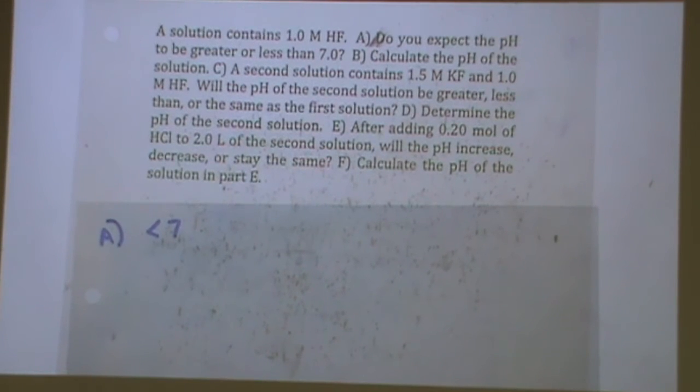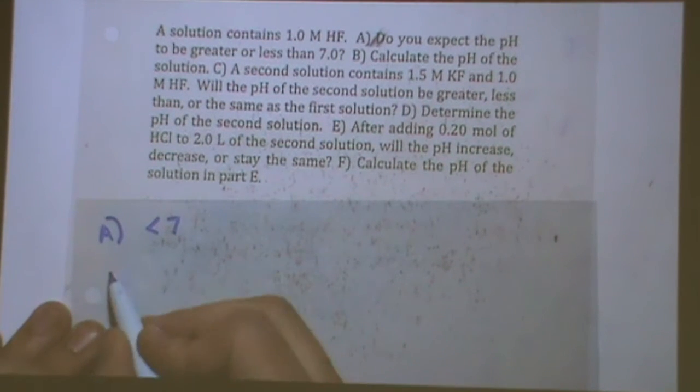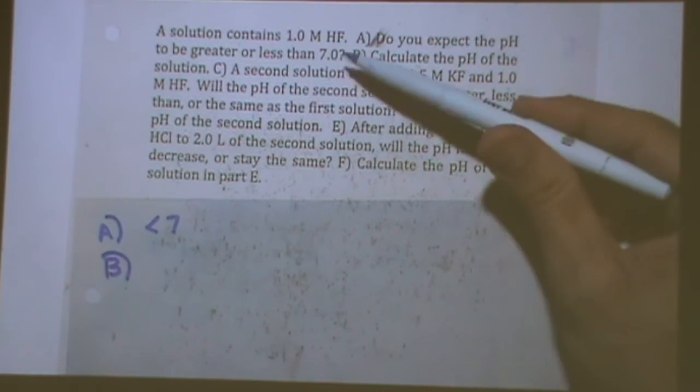So it might not be crazy small, so it won't be around 0, but it'll be less than 7 for sure. Part B, okay, kind of the pH of the solution. Okay, what kind of acid is this?